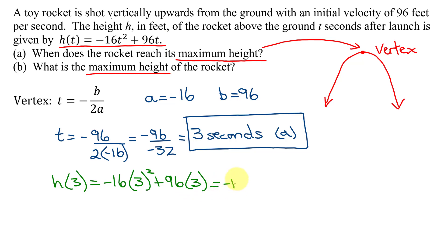So I get negative 16 times 3 squared is 9. Plus 96 times 3 is 288. Negative 16 times 9 is negative 144 plus 288. And what is that? That is positive 144. So the height of the rocket at 3 seconds when it reaches its maximum height is 144, and h is measured in feet. So the maximum height of the rocket is 144 feet. And that is the answer to part B of this problem.